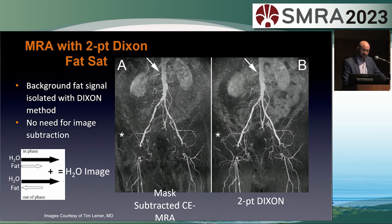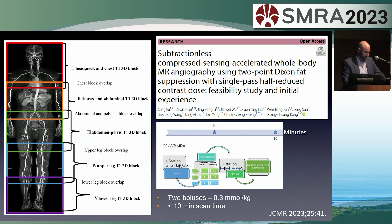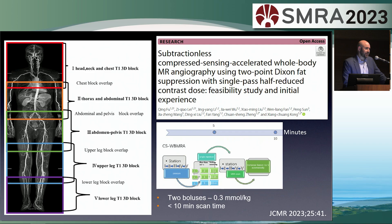Subtractionless MRA using the Dixon method doesn't require worrying about misregistration between the mask and the contrast-enhanced imaging. Instead, fat-water separation robustly separates bright signal from fat and contrast-enhanced vascular structures, as seen in this patient with extensive atherosclerotic disease. This has been extended to subtractionless whole-body, highly accelerated MR angiography with compressed sensing, dropping total scan time from about 30 minutes to about 10 minutes. Total contrast is 0.3 millimoles per kilogram — a triple dose — but it's very time-efficient for whole-body screening.